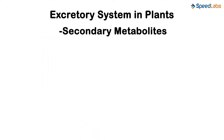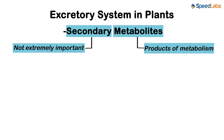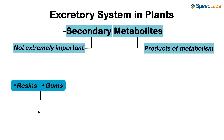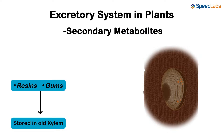Next in our list are secondary metabolites. What are these exactly? As the name suggests, the term metabolites means the product of metabolism, while secondary means not extremely important. Thus, secondary metabolites are the compounds which are not of much use to the plants. These include resins, gums, etc. How will the plants get rid of them? Well, these are stored in the old xylem. Thus, as the bark of the tree grows older, the outer layers start getting filled with these compounds. That is the reason why sometimes we find sticky substances oozing out from the bark of trees when cut.